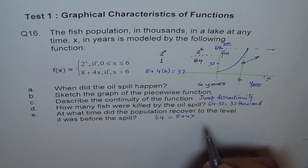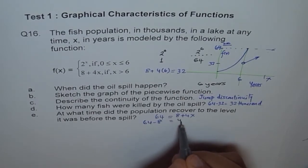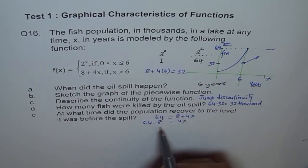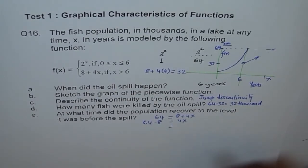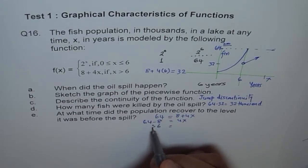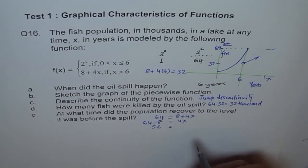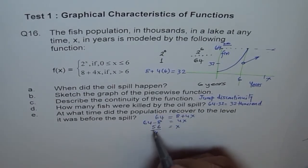So we do 64 minus 8 equals 4x. 64 minus 8, when you take away from 14, it will be 6 and 56. Then you divide by 4 and get x. 4 times 14 is 56. So x equals 14.